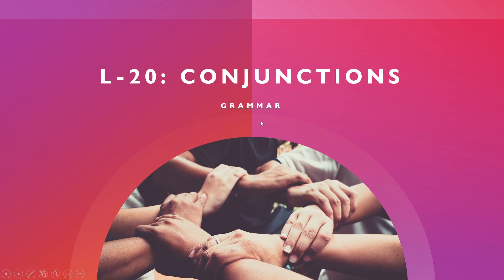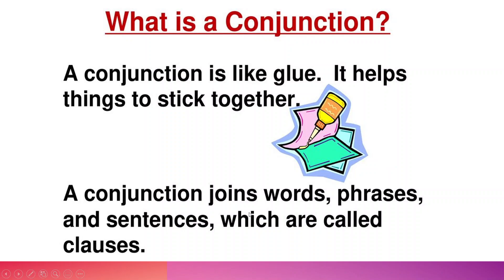So we are going to know about conjunctions — the way it joins, how it joins two sentences. What are conjunctions? I would request everyone using mobile phones to switch to landscape mode so the visibility is very clear. So what is a conjunction? A conjunction is like a glue. It helps things to stick together. A conjunction joins words, phrases, and sentences which are called clauses.